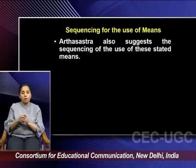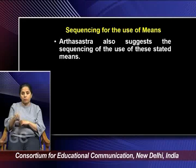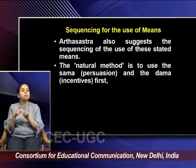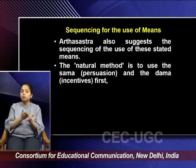There is a sequencing provided in the book Arthashastra. Arthashastra suggests that the first method is the natural method — use Sama, that is persuasion, and Dama first. If you are acting naturally or in an obvious manner, you can use a combination of Sam and Dama: persuade a person, give some incentive, and the person will get motivated to work. So at the very outset, Kautilya says we should follow a combination of Sam and Dama.